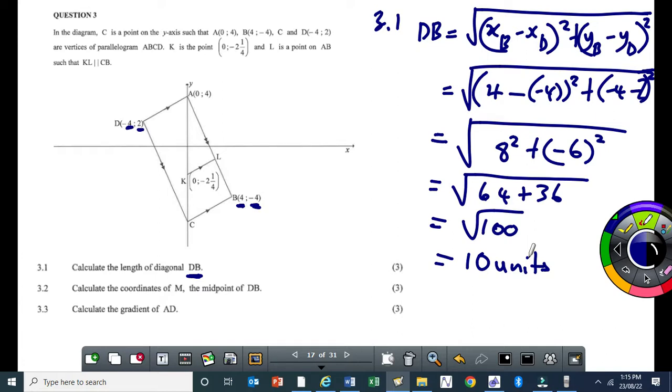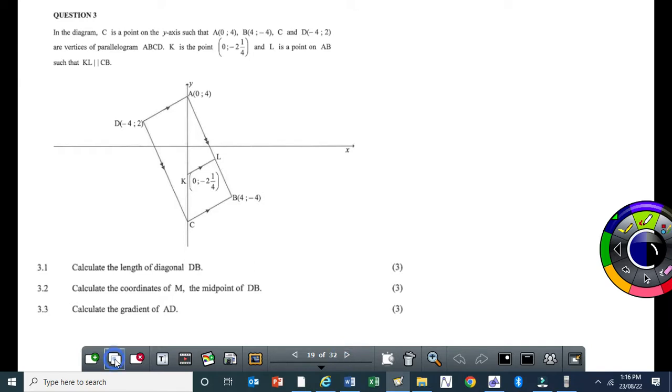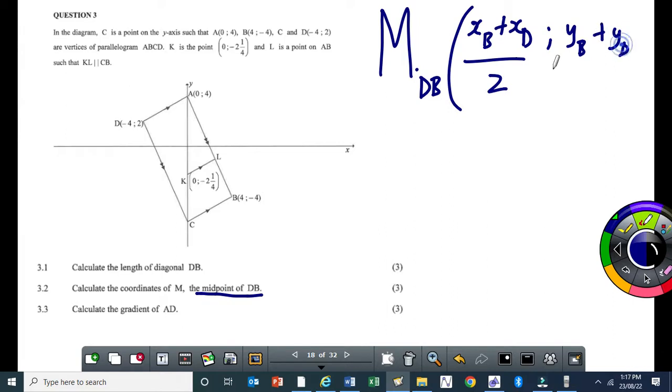So if you did the work, just mark your work and follow me. See how this works, even in your paper, your September control test, you're gonna see a question, I'm telling you, finding the length, sometimes it will say distance is the same. 3.2 says find the coordinates of M, which is the midpoint of DB. This is also easy.